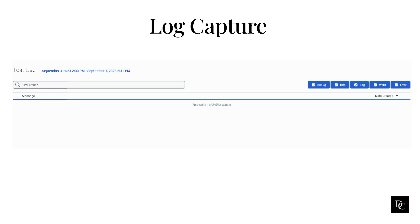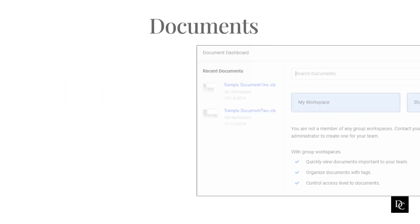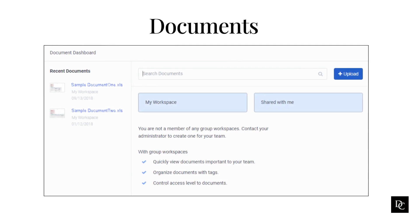Let's touch on the final item — Documents. In Documents, the Document Dashboard is the first page you see. You use the Document Dashboard to view the workspaces that organize your files, open your personal workspace, search for files across all your workspaces, and see the list of files that you have recently uploaded or edited. Essentially, Documents is your own personal dashboard where you can store company documents and be a part of group workspaces, which enables you to be completely collaborative amongst your team.